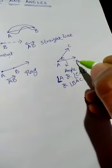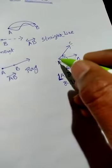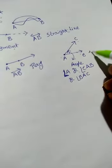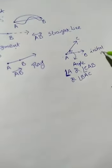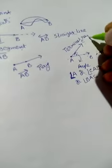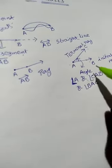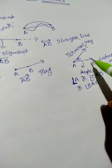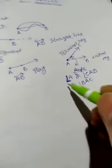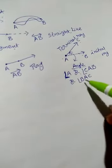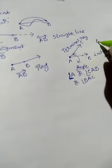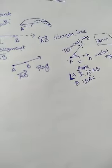An angle is formed by two rays with one common end point. Here AB is called the initial ray and AC is called the terminal ray. These two rays are also called the arms of the angle. So every angle has two arms — an initial ray and a terminal ray.